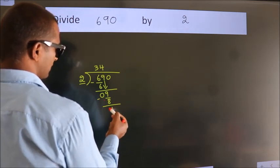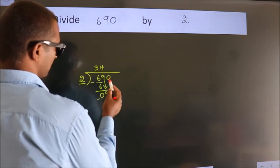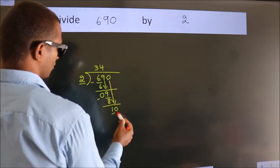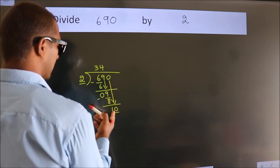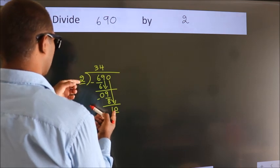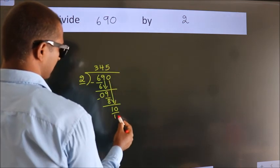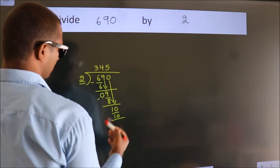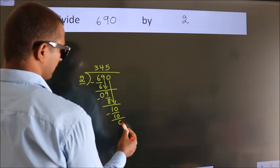After this, bring down the beside number. So 0 down. So 10. When do we get 10? In 2 table, 2 times 5 is 10. Now we subtract. We get 0.